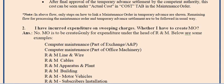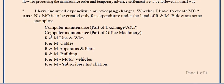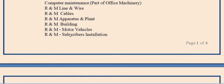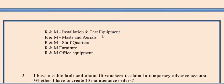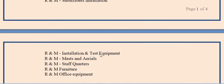Second important point: if you have incurred expenditure on sweeping charges, you do not need to create a maintenance order. Maintenance orders are to be created only for expenditure under repair and maintenance (R&M). Examples include: computer maintenance, R&M line and wire, R&M cable, R&M operators and plant, R&M building, R&M motor vehicles, subscriber installations, R&M installation and test equipment, staff quarters, R&M furniture, and R&M office equipment.